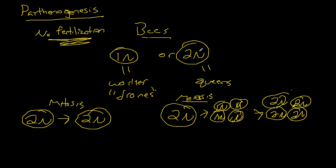The 2n zygote can come about by mitosis in a single step or meiosis in three steps.